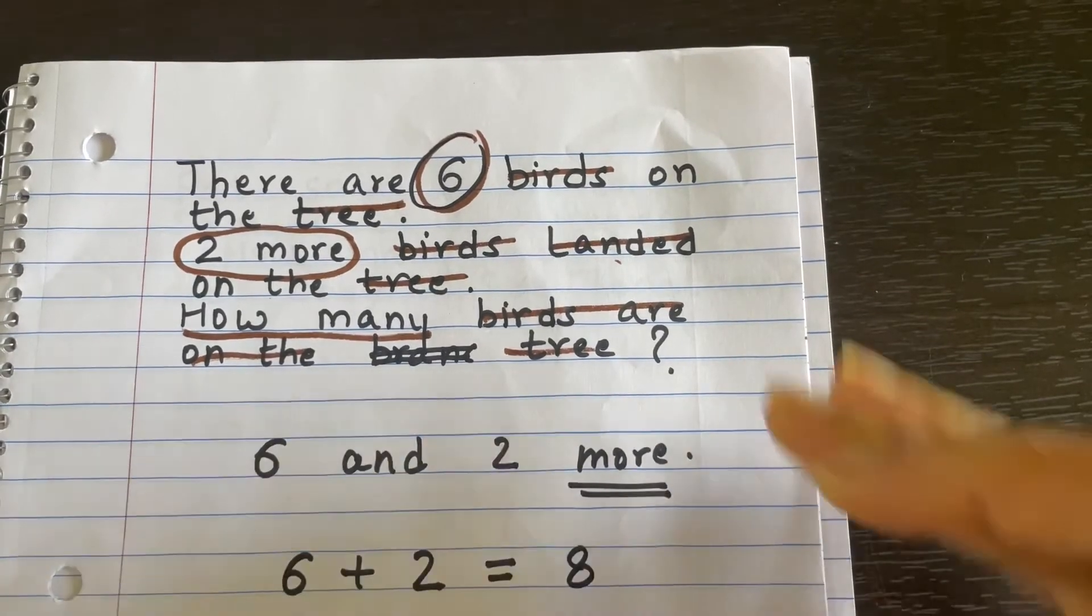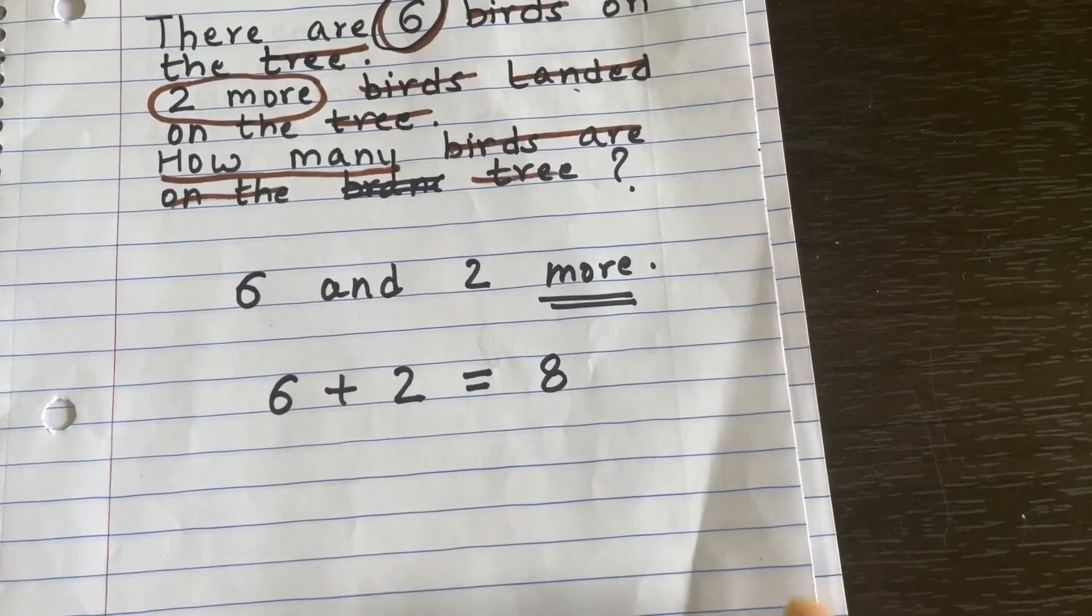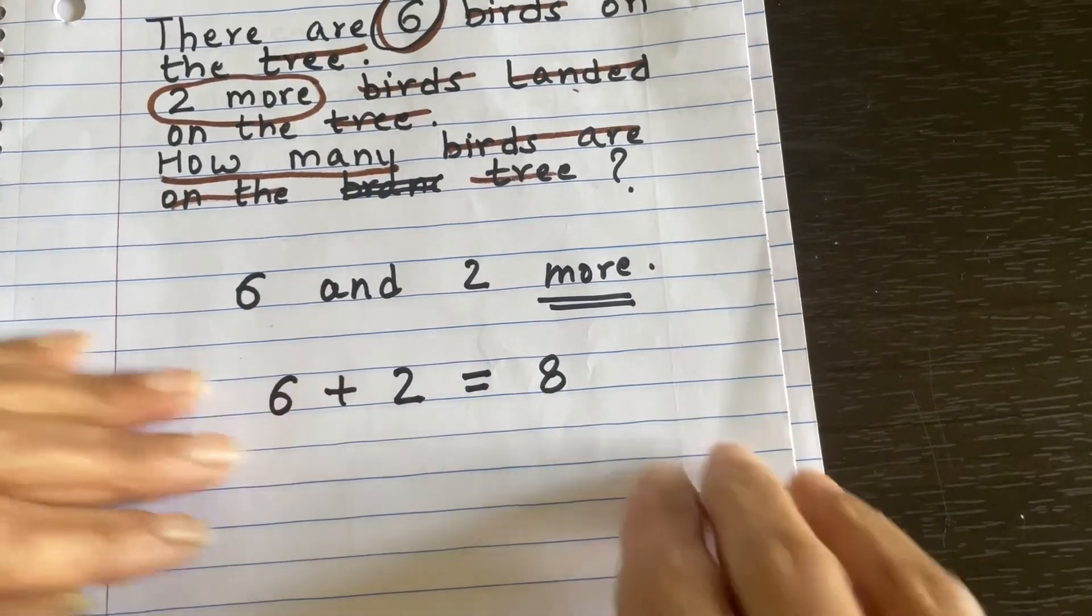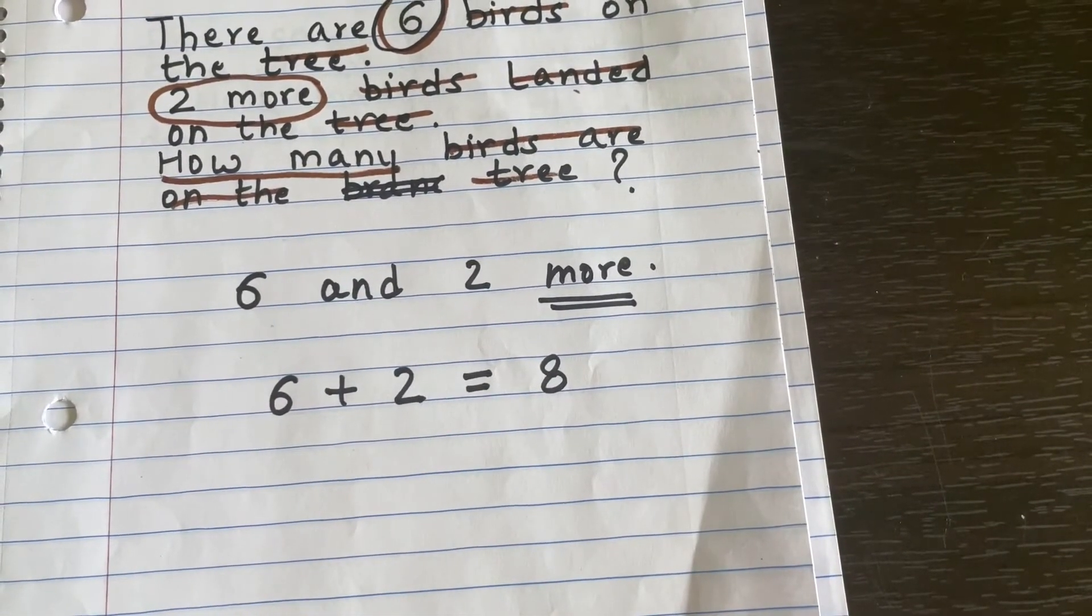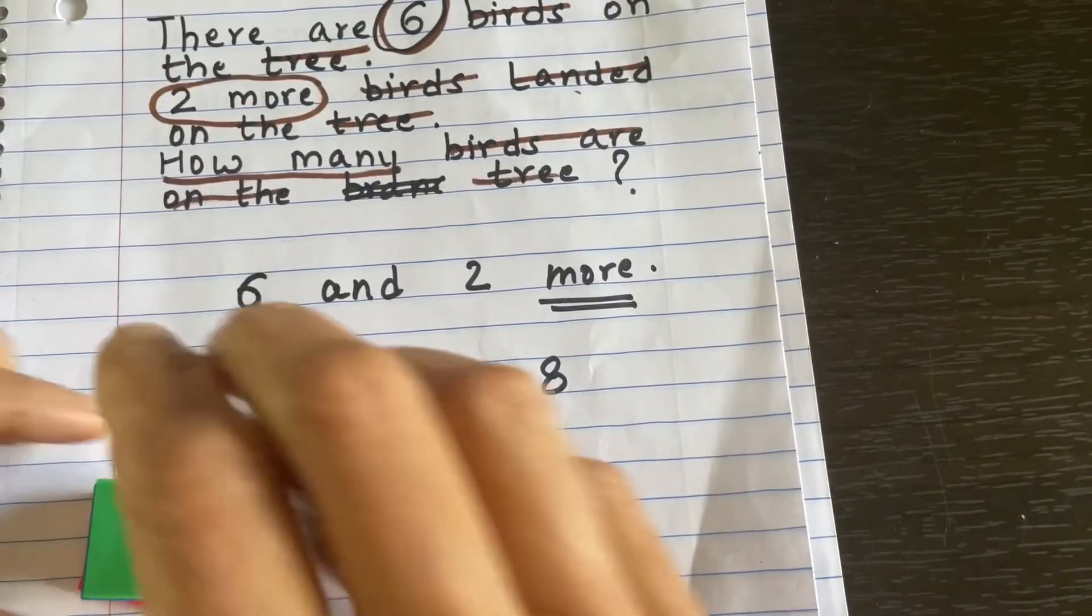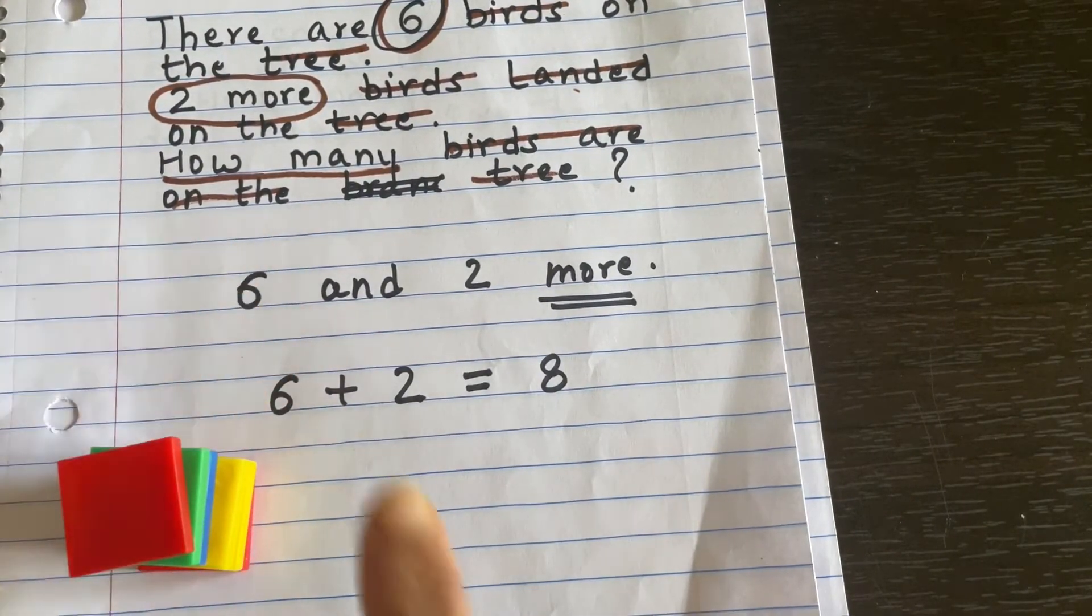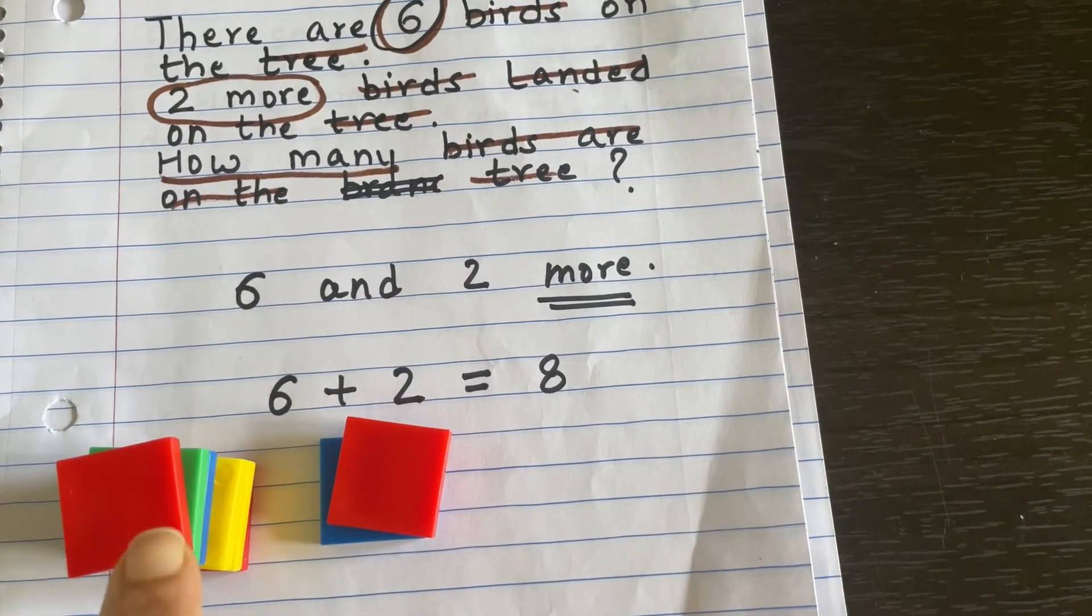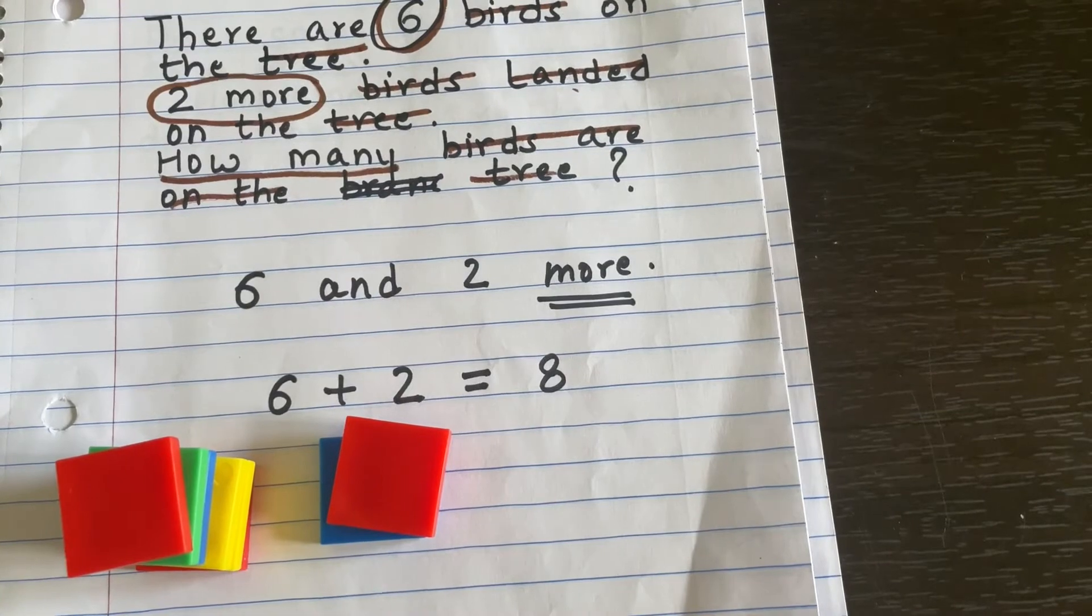Now we have solved this, but we should not just stop here. We have to check it, whether what we have done is correct or not. That's always a good practice to follow. Let's see: one, two, three, four, five, and six. Now how many more we need here? Two. So six, then seven, eight. So our answer is correct and now we have checked it.